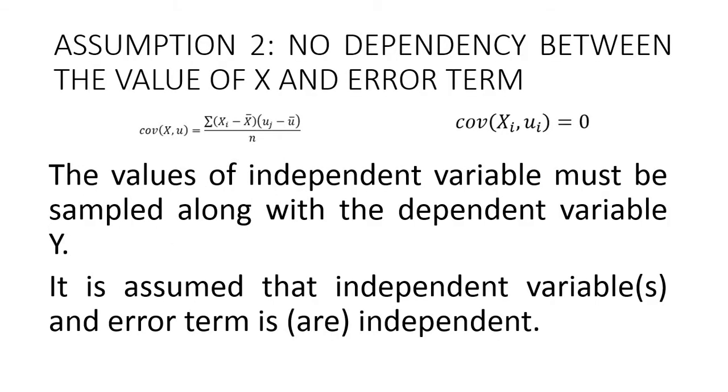The second assumption states that there is no dependency between the value of independent variable and the value of error term or residual. So we measure this dependency using covariance, and here is the formula. You always calculate covariance between two variables as the ratio of the sum of products of distances between empirically observed values and average values, and the number of observations.